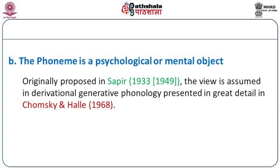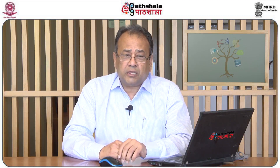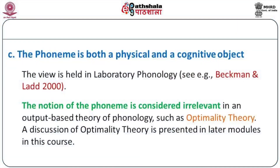The second notion of the phoneme is that it is a psychological or mental object. The first person to have introduced this notion was Edward Sapir, way back in 1933 in his famous book called Language. This notion was not accepted in the theory dominant in the 1940s and 50s, but it came to be accepted in generative linguistic theory. Thus, transformational generative phonology assumes the view that the phoneme is a mental or cognitive object.